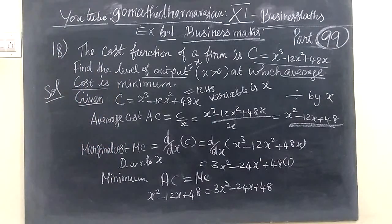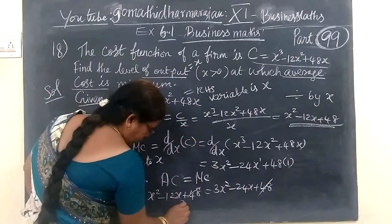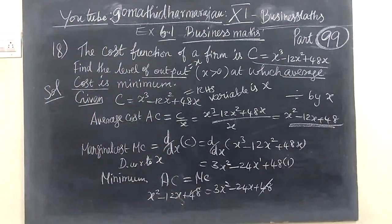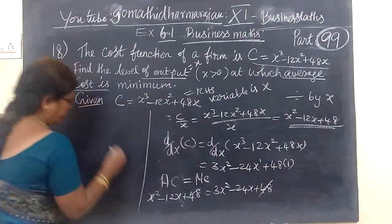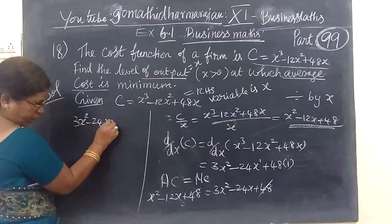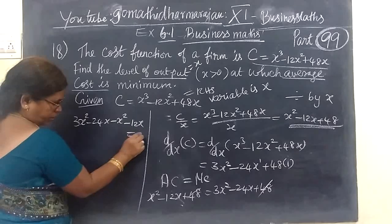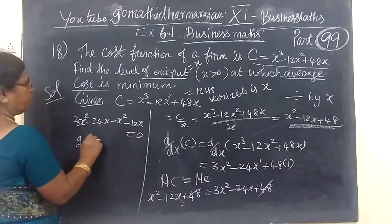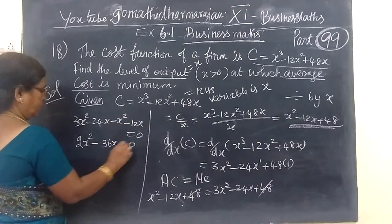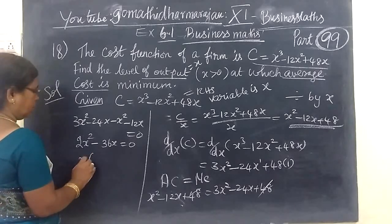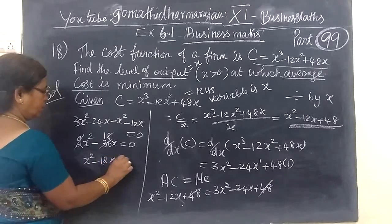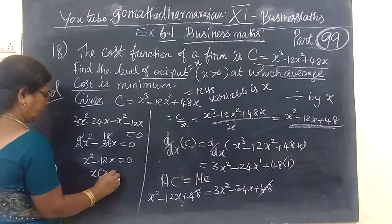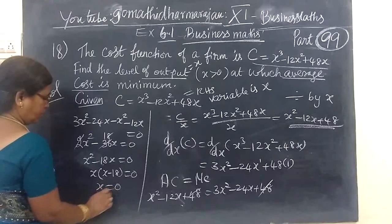The 48 and 48 cancel out. So we are writing 3X squared minus 24X minus X squared minus 12X equal to 0. Therefore, 2X squared minus 12X equals 0, which gives X squared minus 18X equal to 0. So X times (X minus 18) equals 0, giving X equal to 0 or X equal to 18.